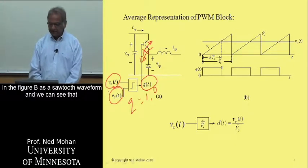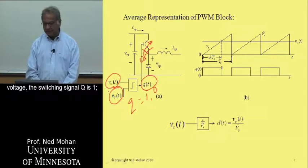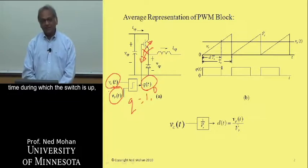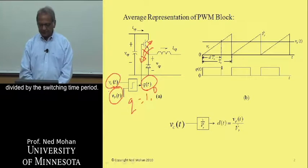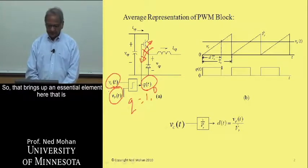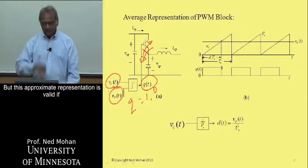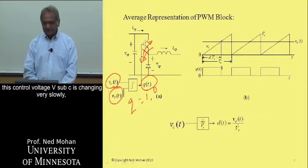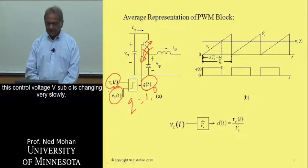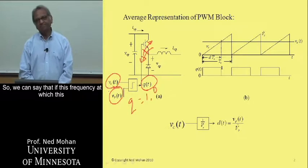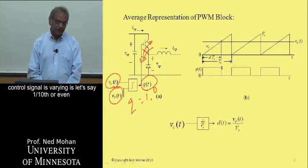When the control signal V_C is greater than the ramp voltage, the switching signal Q is 1, otherwise it's 0. We have this duty ratio D, which is the time during which the switch is up divided by the switching time period. This average representation is approximate, but it is valid if the control voltage V_C is changing very slowly compared to the switching frequency — at a frequency one-tenth or smaller compared to the switching frequency.